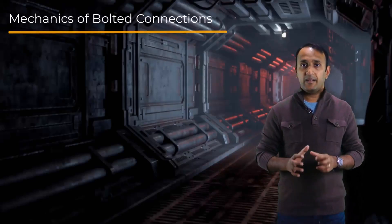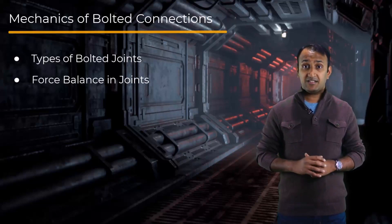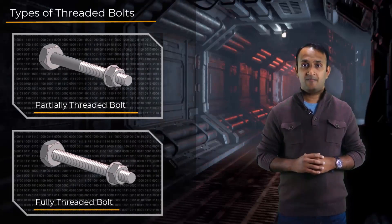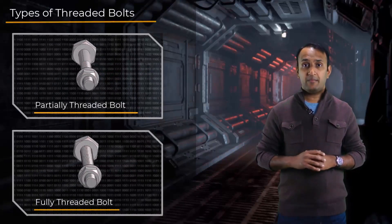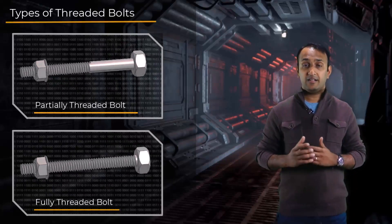In this lesson, we will learn about the different types of bolted joints and how their mechanics make them different from each other. It's important to learn this distinction, because picking the right fasteners for each joint type is crucial for the performance of the bolted joint. For example, two of the most commonly used bolts are the partially threaded and the fully threaded bolts. Choosing the wrong bolt type in a bolted joint design can lead to the failure of the bolt and ultimately the joint itself.